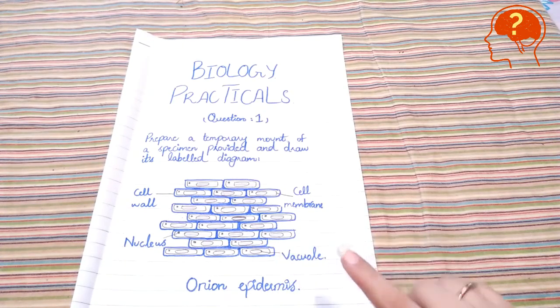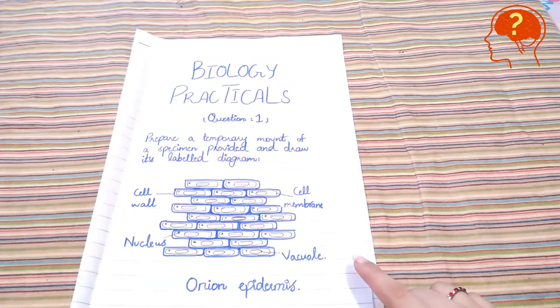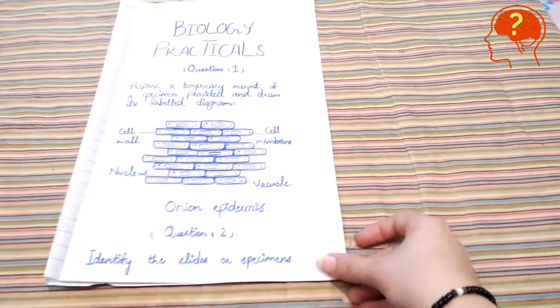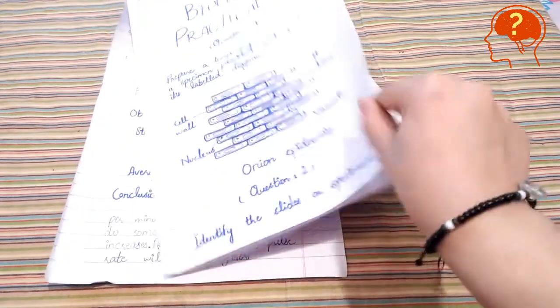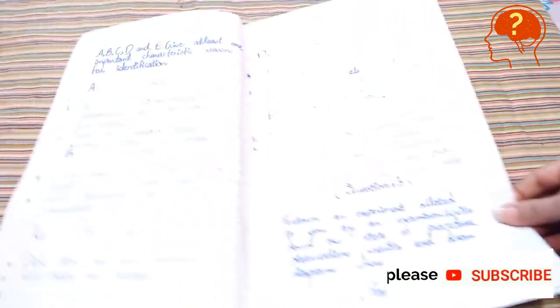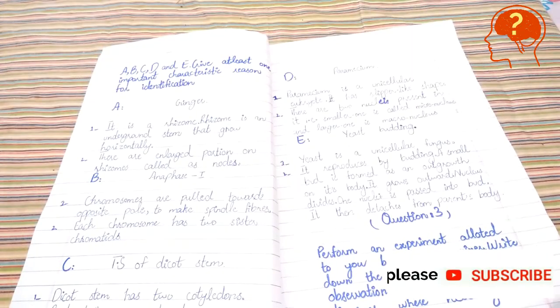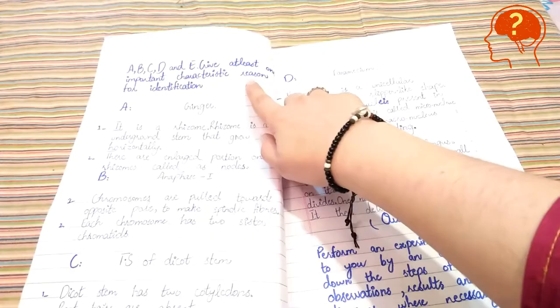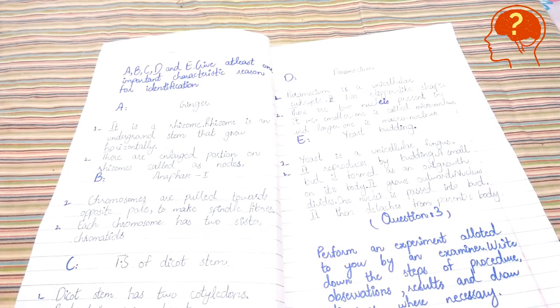Now question number two: identify the slides or specimens A, B, C, D, and E. Give at least one important characteristic reason for identification. This question is very important to notice.